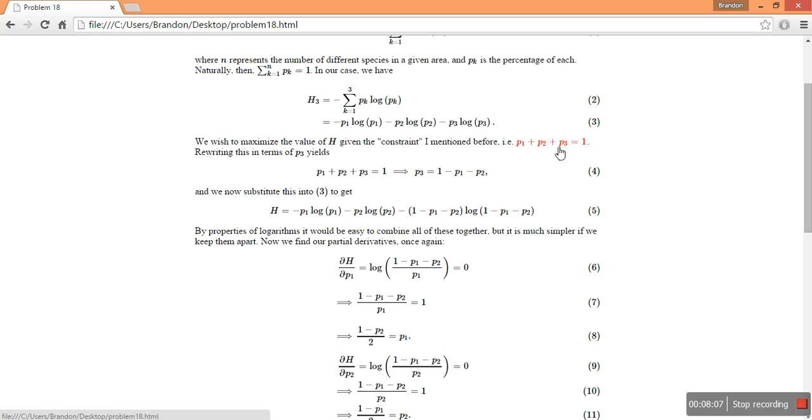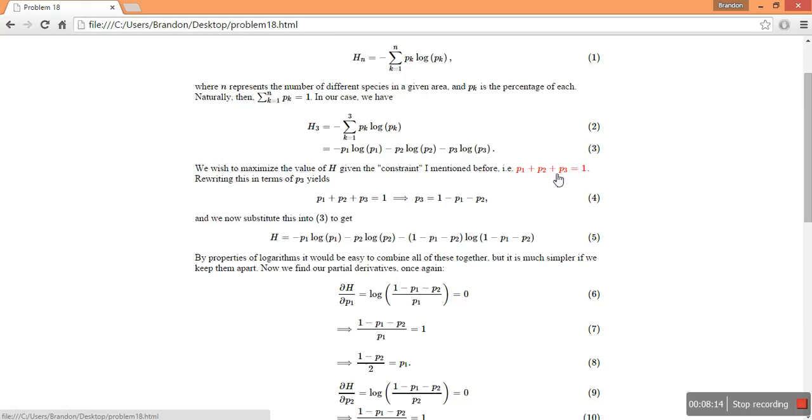And then, based on our constraint up here, p sub 1 plus p sub 2 plus p sub 3 equals 1, we can substitute our p sub 1 and p sub 2 in, and we find that p sub 3 is also 1 third, which is in 16 here.